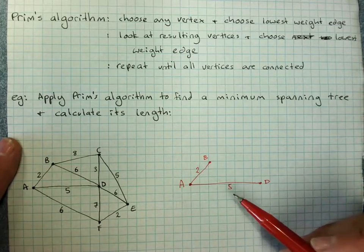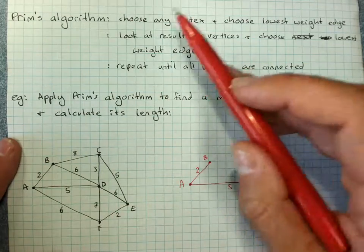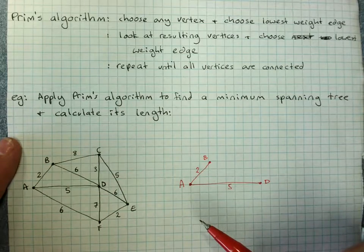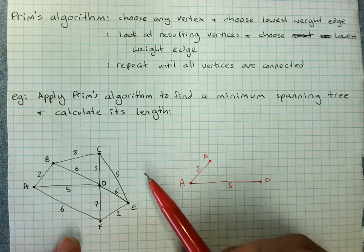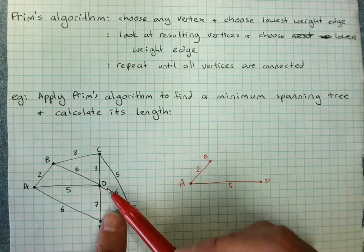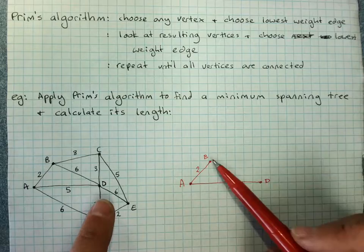Now I've only connected three of the vertices. So I have to keep repeating this until I've got all the edges. Now that's quite a lot of edges now that we're looking at because it's everything coming off A, B or D.